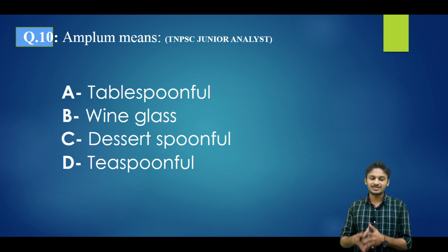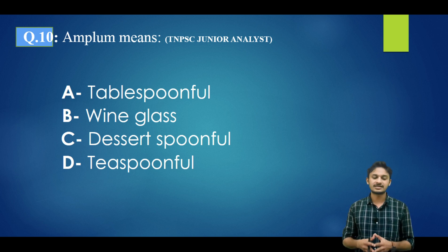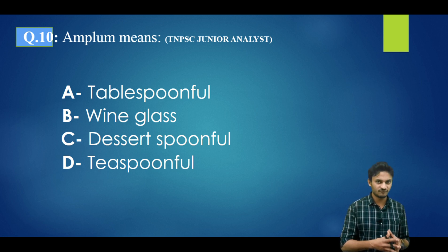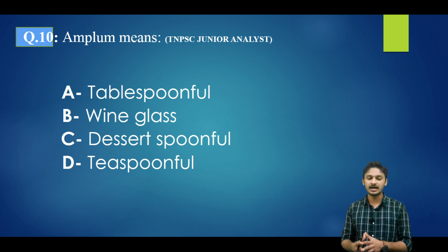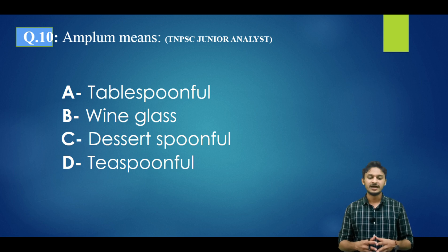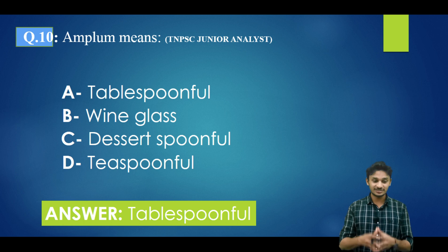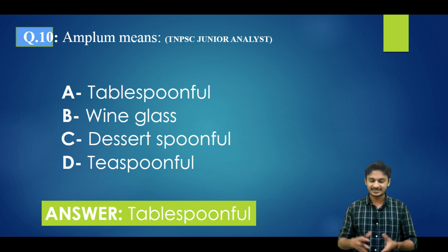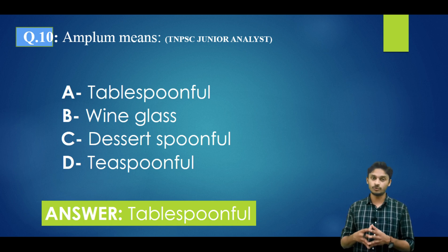Question number ten: 'emblem' means — options are: tablespoon full, wine glass full, dessert spoon full, teaspoon full. Option A is tablespoon full and option D is teaspoon full. The correct answer is option A — emblem means tablespoon full.